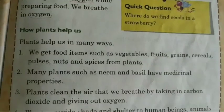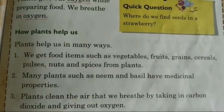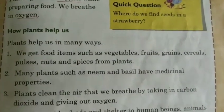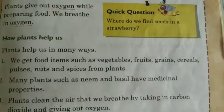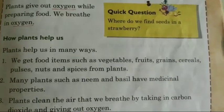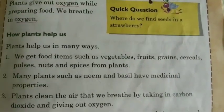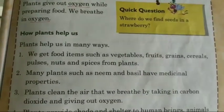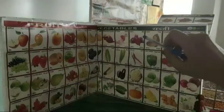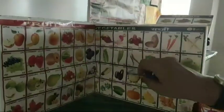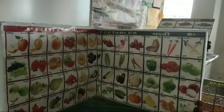Our first point is: plants help us in many ways. We get food items such as vegetables, fruits, grains, cereals, pulses, nuts, and spices from plants — all these things we get from plants. I am going to show you a demo about all this. Here we have some vegetables, and here a food chart has been given. In Part 1 we learned about leaves — which leaves we can eat.